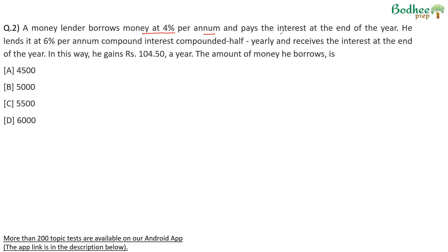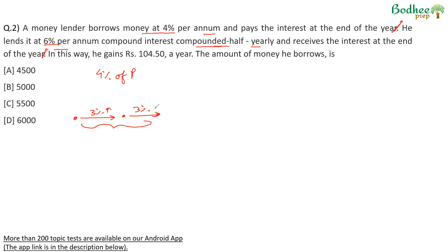Question two: a money lender borrows money at 4% per annum and pays the interest at the end of the year. He lends it at 6% per annum compound interest compounded half-yearly and receives the interest at the end of the year. He gains 104.5 rupees a year. He pays 4% of the principal. Since it is one year, it doesn't matter whether it's compound or simple. For the lending side, compounded half-yearly means 3% every 6 months. Using successive percentage change, the effective yearly rate is 3 + 3 + (3×3)/100 = 6.09%.